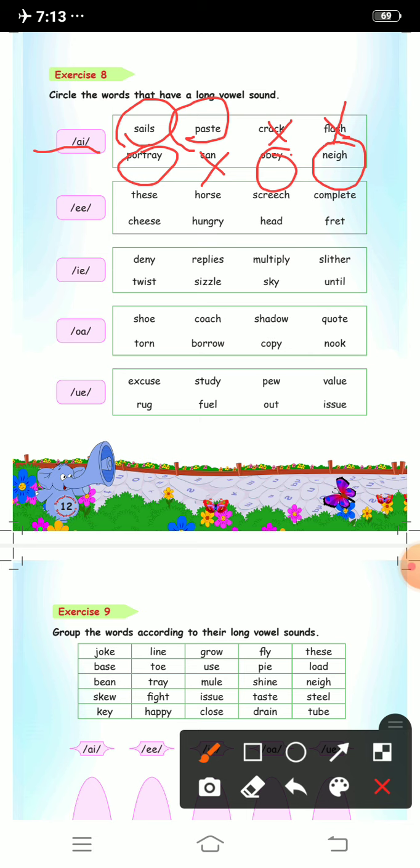Next is long e sound. First one is these, yes you will circle. Horse, no, because it doesn't make the e sound. Screech, yes. Complete, yes. Cheese, yes, it makes the long e sound. Hungry, here it makes the e sound because your y makes the e sound, so you will circle this word also.